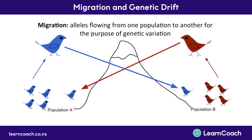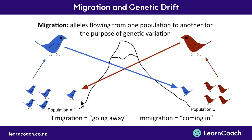Two other terms that are helpful to know for your exams. One is emigration, which means going away — this blue bird here is emigrating away from its population. Whereas immigration, with an I, means coming in, so this blue bird is immigrating into population B, the red bird's population.